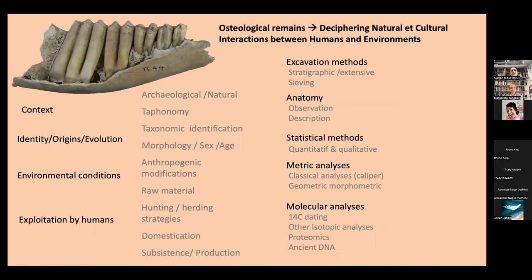Today we are focusing more on bone remains, osteological remains, and how they can contribute to the understanding of interactions between humans and environments. If you take, for example, a mandible composed partly of bone and tooth of a sheep or goat, different levels of information can be extracted from this single bone. The first information is the context — and of course archaeology is the base and the most important source of information.